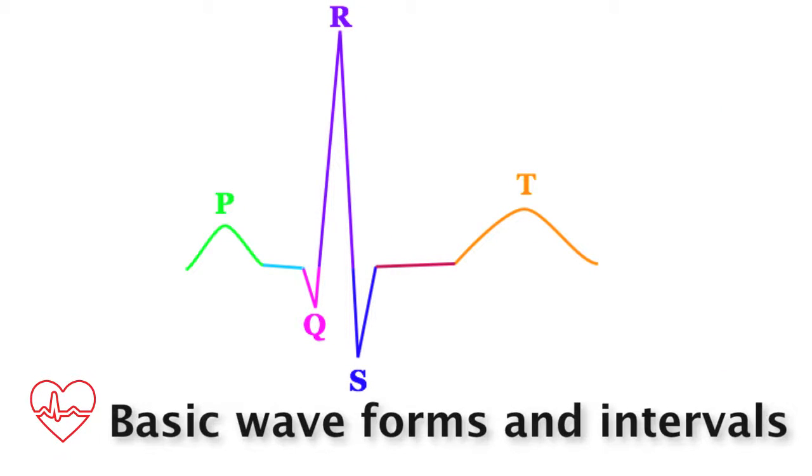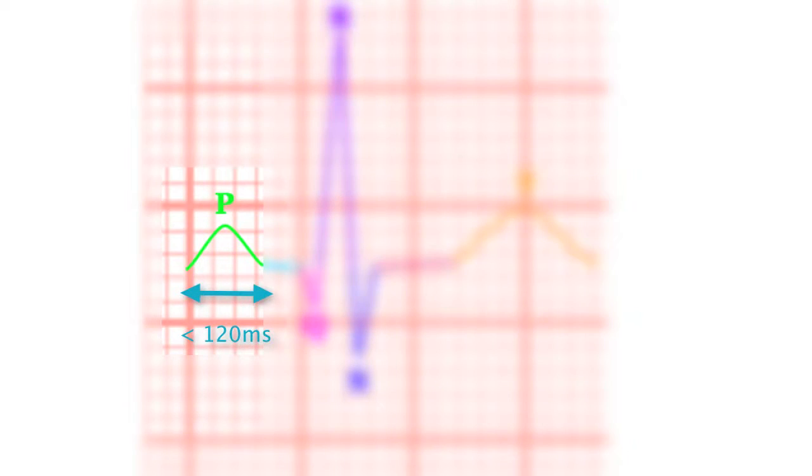Now, let's go over each waveform on the EKG. The P wave represents depolarization of both atriums. Its normal width is less than 120 milliseconds, or three little boxes. Its normal height is no more than 2.5 millimeters.